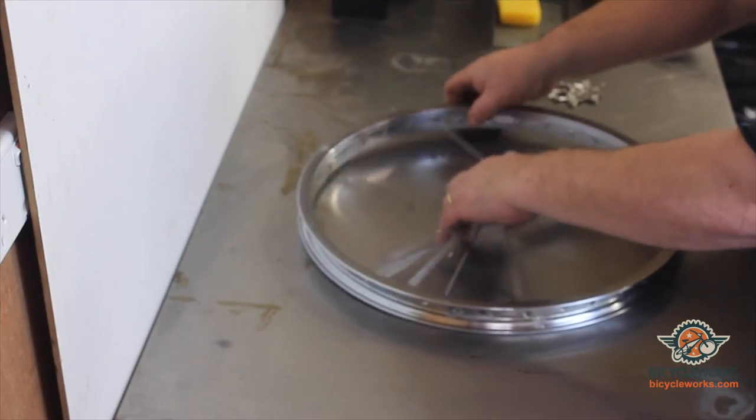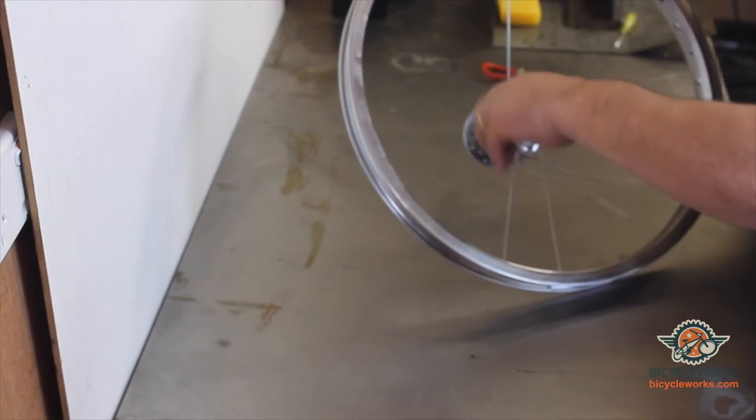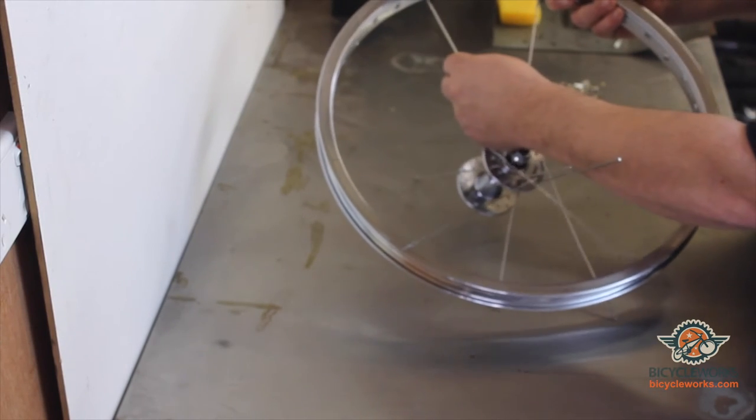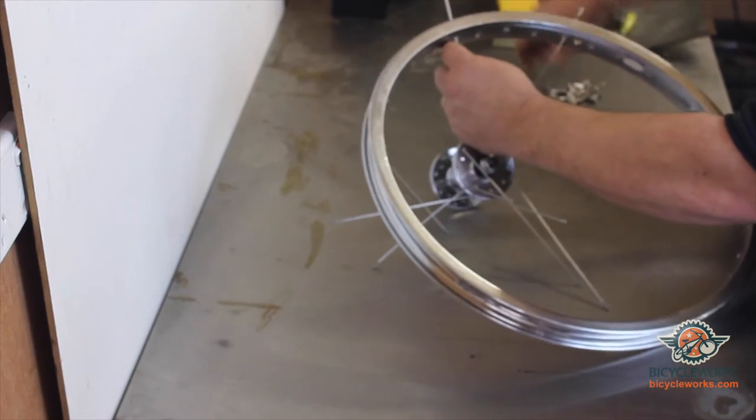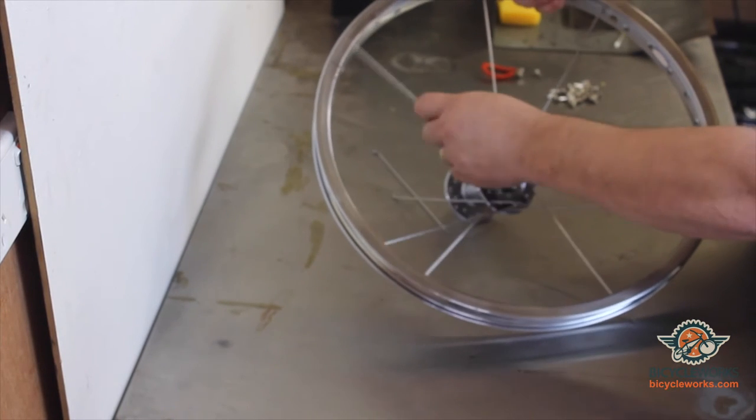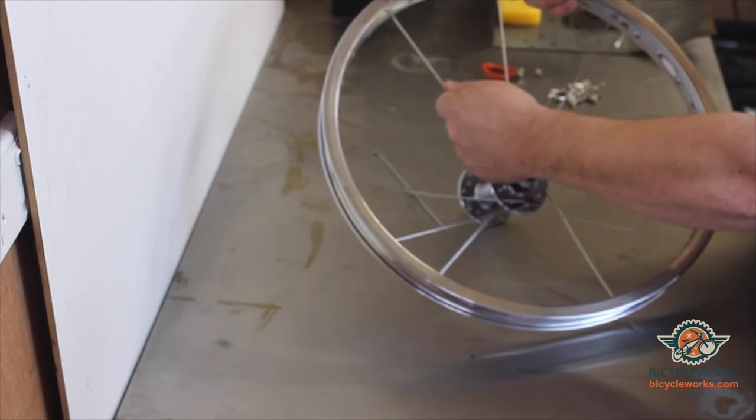Once you've got that done, take the next spoke in the hub and put it to the fourth hole in the rim. After you've done that, then each spoke in every fourth hole until you get back to the valve hole.